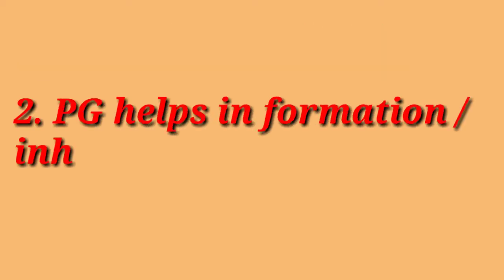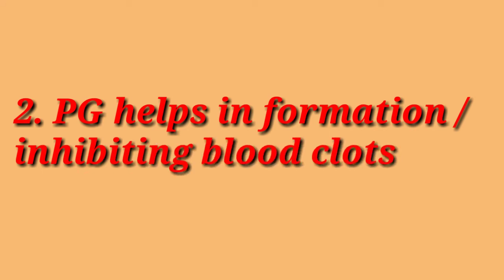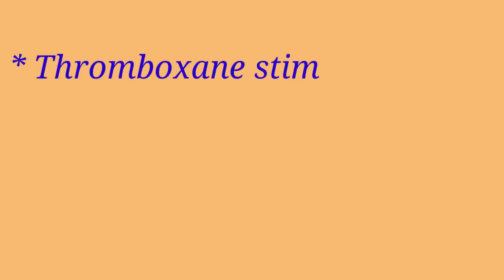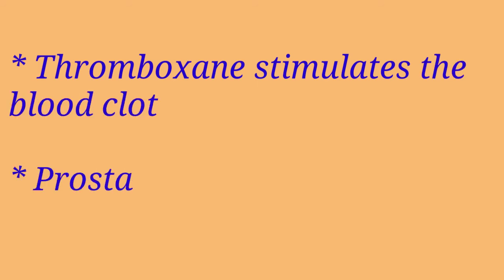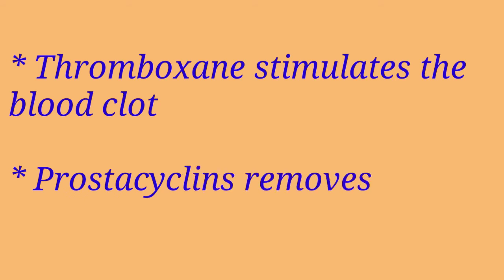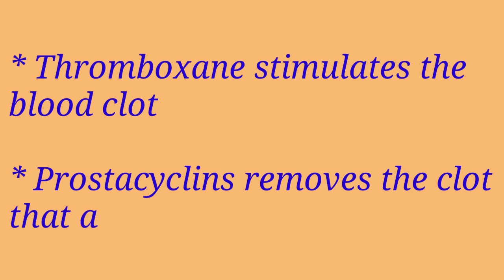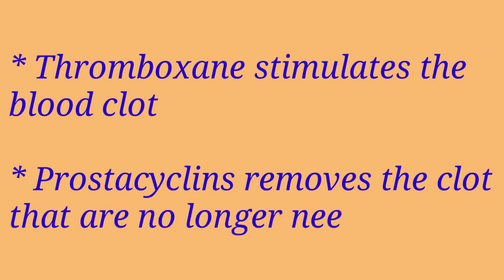Prostaglandin helps in the formation or inhibition of blood clots. When a blood vessel is injured, prostaglandin called thromboxane stimulates the formation of a blood clot to try to heal the damage, and also causes the muscle in the blood vessel to contract to prevent blood loss. Another prostaglandin called prostacyclin helps in removing blood clots that are no longer needed, and also causes blood vessels to relax.